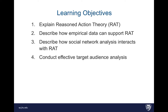Our objectives for this lesson are to discuss the reason-action theory, which is a common model of behavior change. We're using this to show how social network analysis impacts behavior change and influence. We'll talk about how empirical data supports the reason-action theory model, how social network analysis interacts with that model, and then we'll talk about conducting effective target audience analysis — targeting an advertisement, messaging campaign, or political campaign to a certain group of people, and figuring out how to tailor your messaging and delivery platform to actually reach that group and make an influence impact.